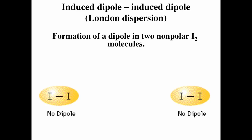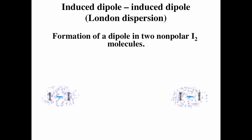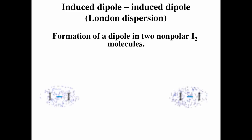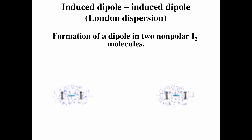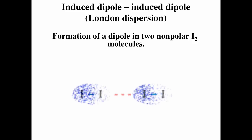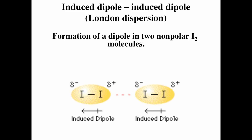Iodine molecules are nonpolar, but when they get next to each other they can induce a dipole moment into each other. An I2 molecule has, on average, an electron cloud symmetrically spread over each iodine atom — I2 is not polar. The attractions or repulsions between the atoms of I2 molecules can distort their electron clouds, so dipoles can be induced momentarily in neighboring molecules. London dispersion dipole moments are temporary and typically weak, and again, the more massive, the easier it is to induce a dipole moment.